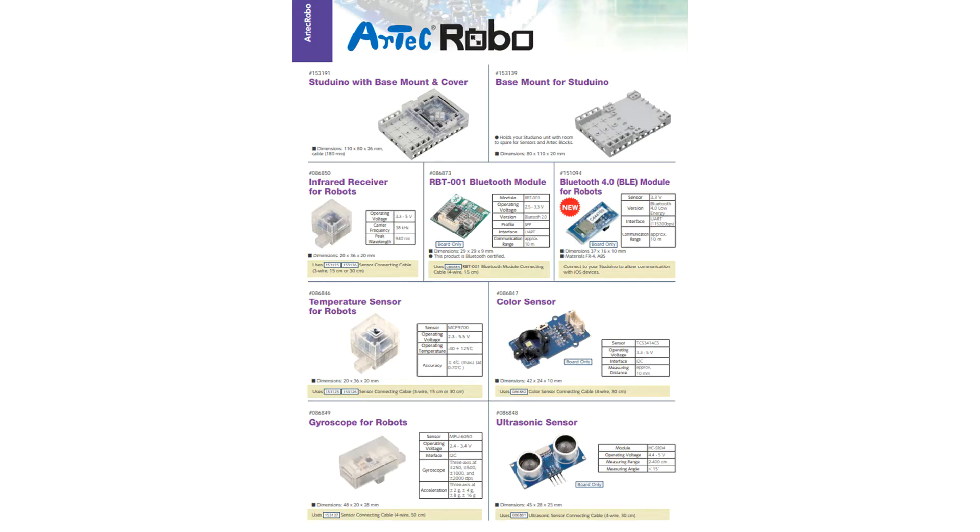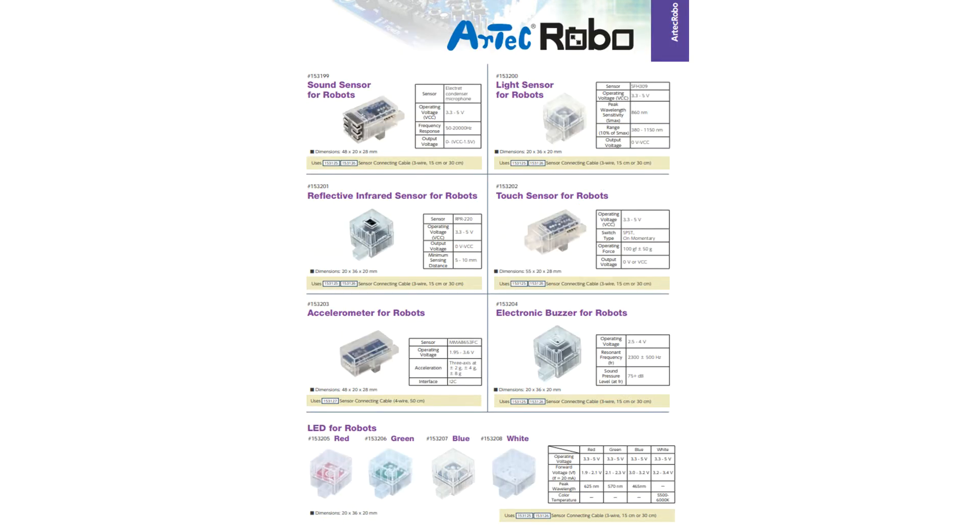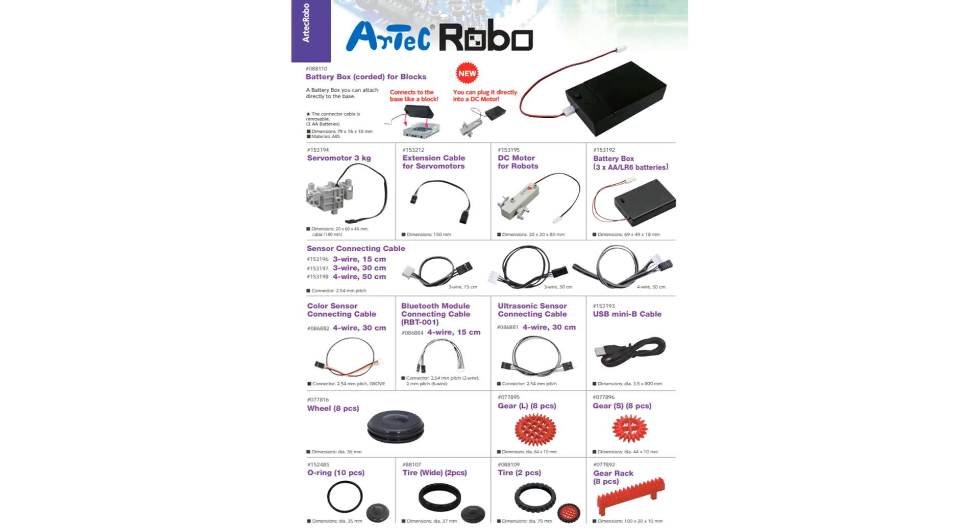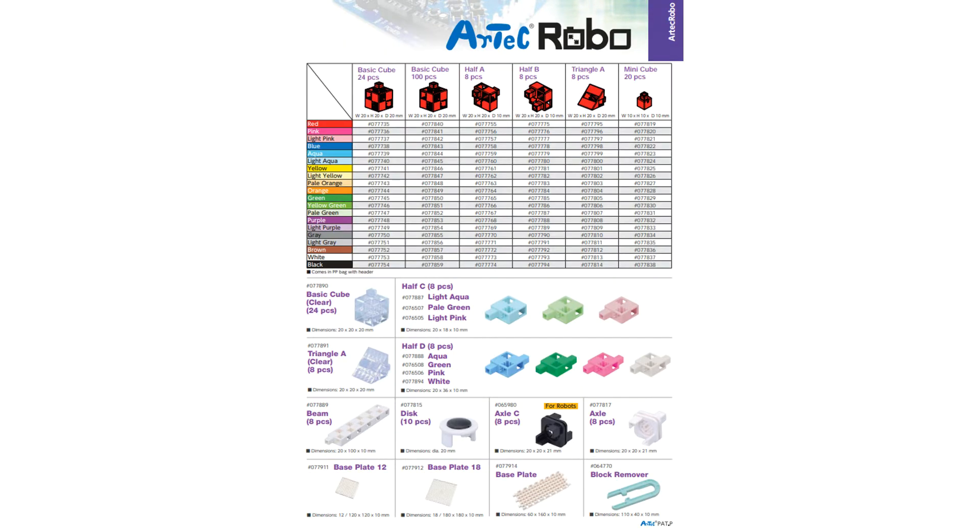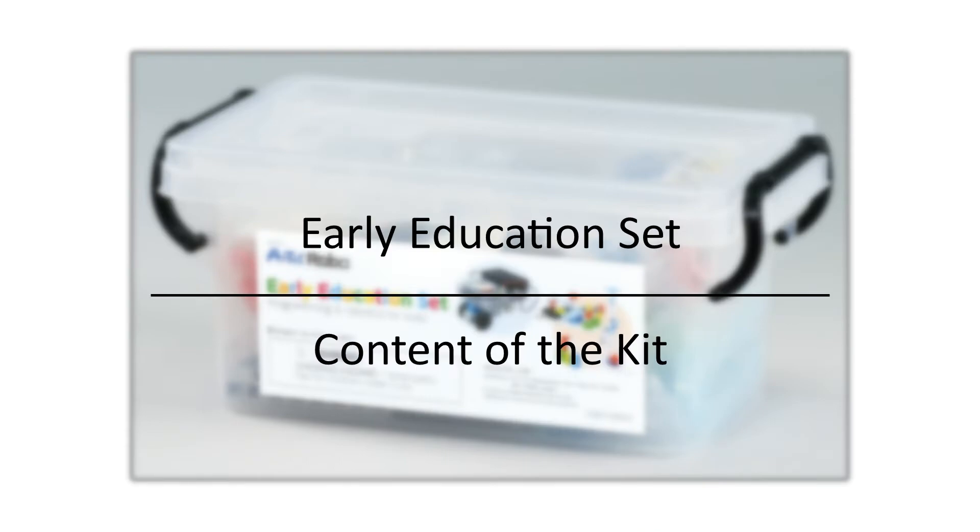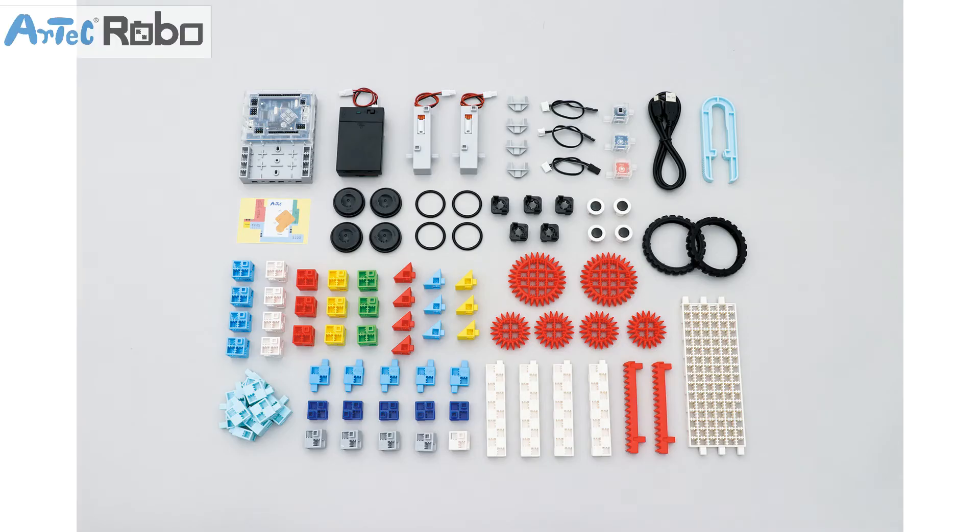If you require more parts, you no longer need to purchase large expansion packs. All of our parts including sensors and motors are available individually. The set includes the following Artec robot and Artec block parts.